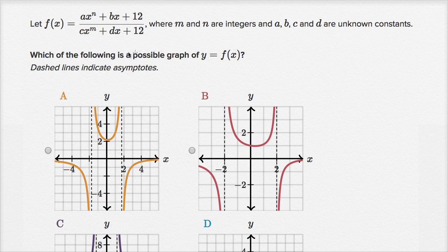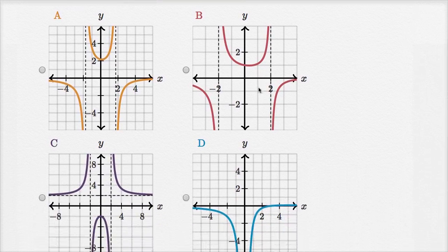All right, this is interesting. Which of the following is a possible graph of y equals f of x? And they tell us that dashed lines indicate asymptotes. And they give us four choices here.